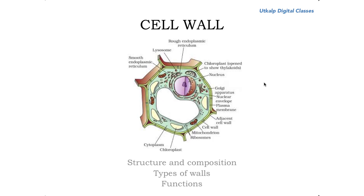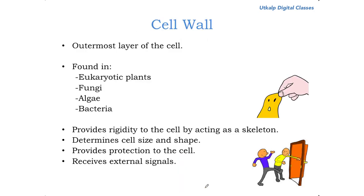In this lecture we are going to deal with the cell wall. Cell wall, as you all know, is essentially present in plant cells and it is absent from animal cells. We are going to discuss the structure and composition of the plant cell walls, the types of walls, and the functions. Cell wall is the outermost layer of the plant cells. It is found in plants, fungi, algae, and bacteria; however, the composition of the cell walls in all these organisms differs significantly.